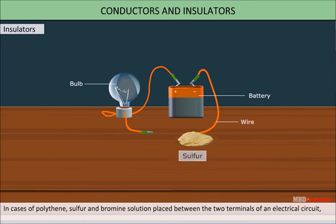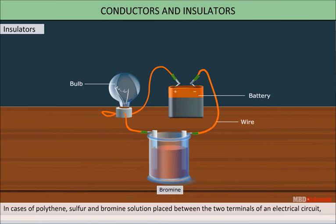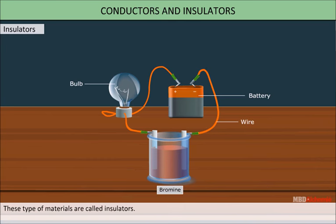In the case of polythene, sulfur, and bromine solution placed between two terminals of an electric circuit, the bulb does not glow. These types of materials are called insulators.